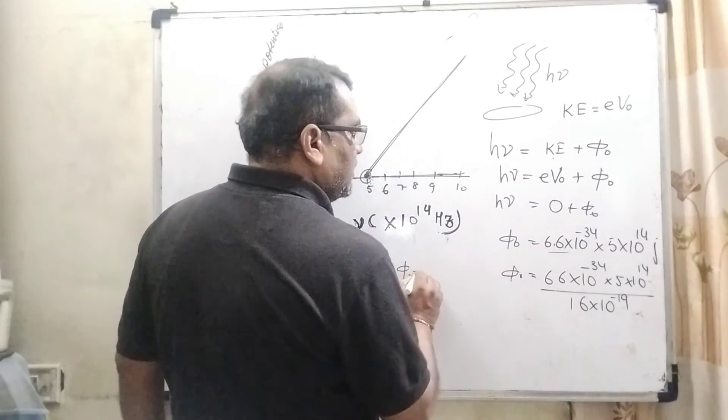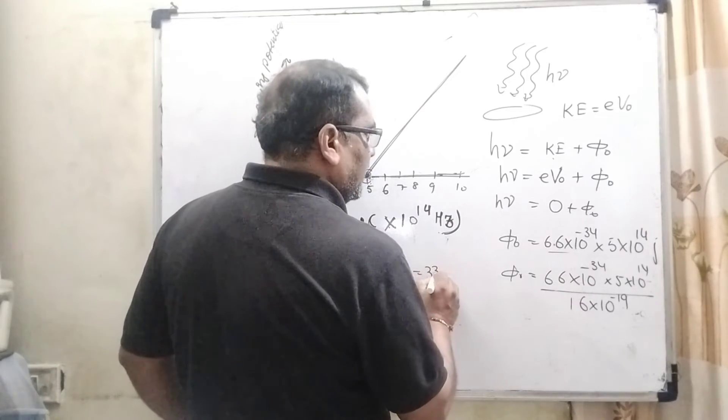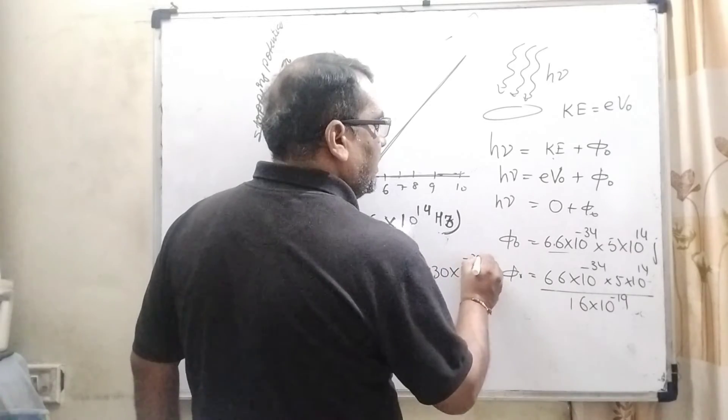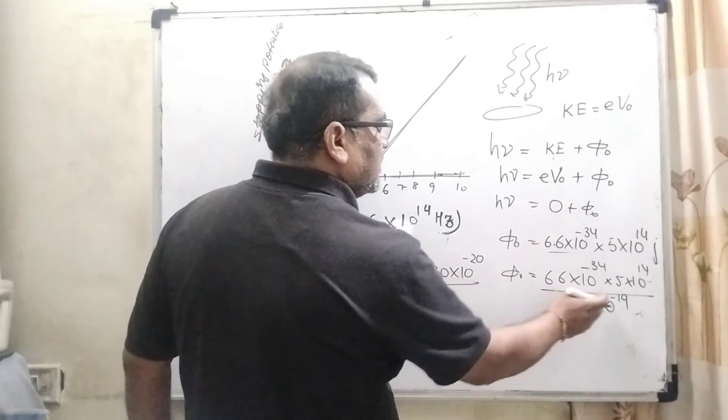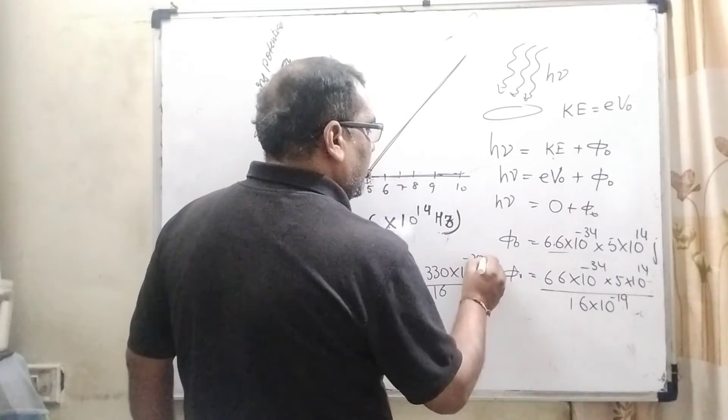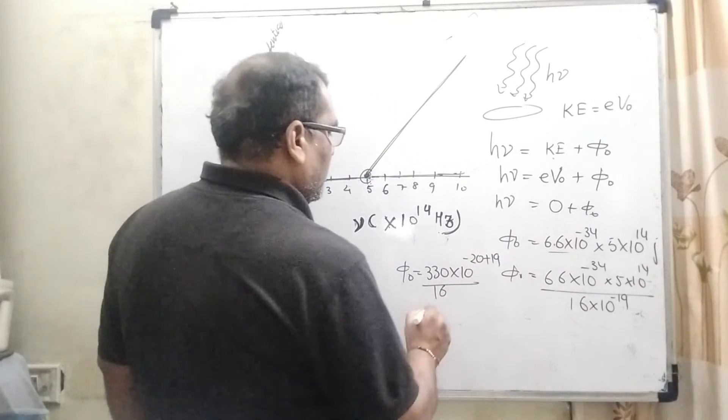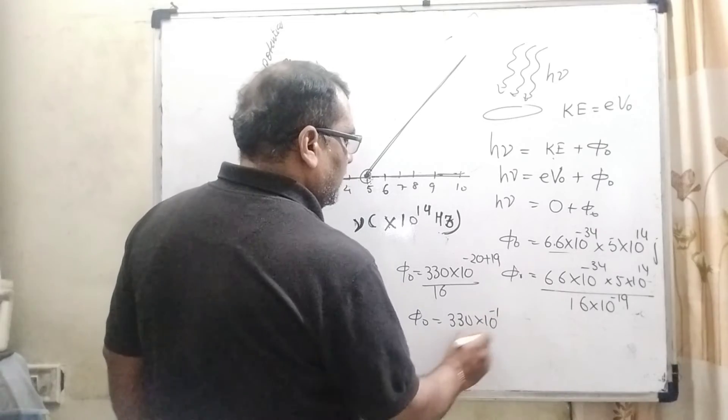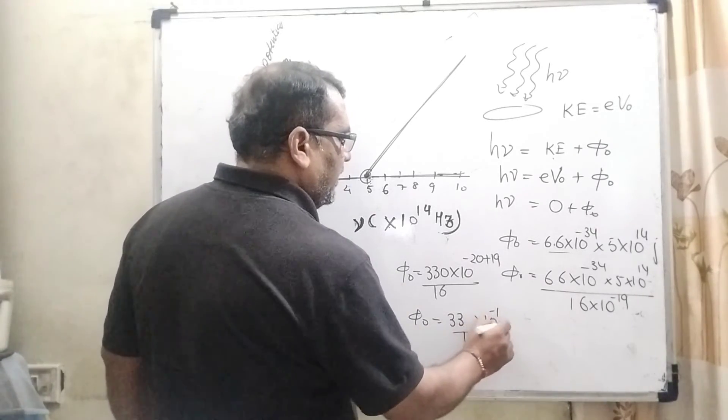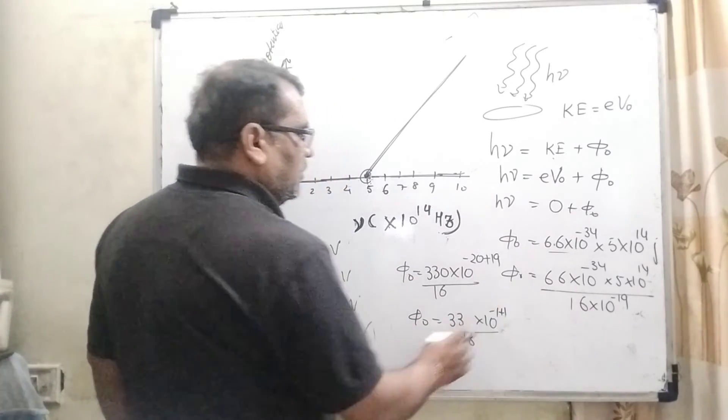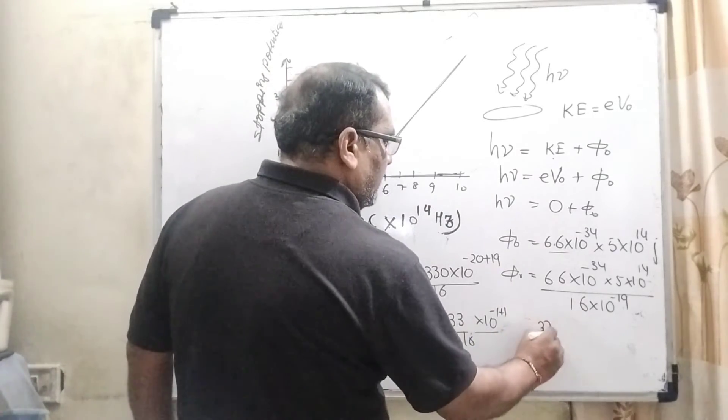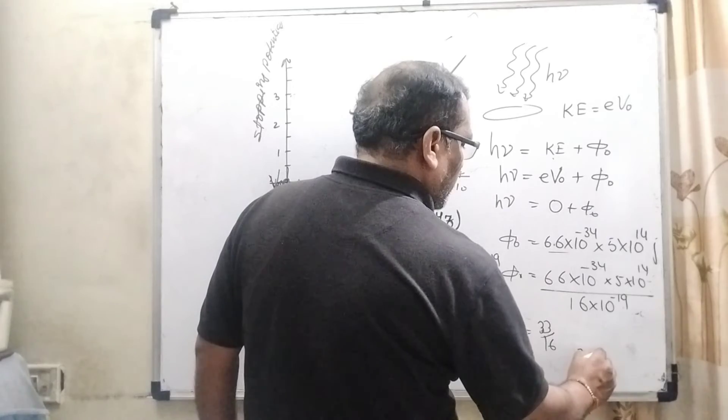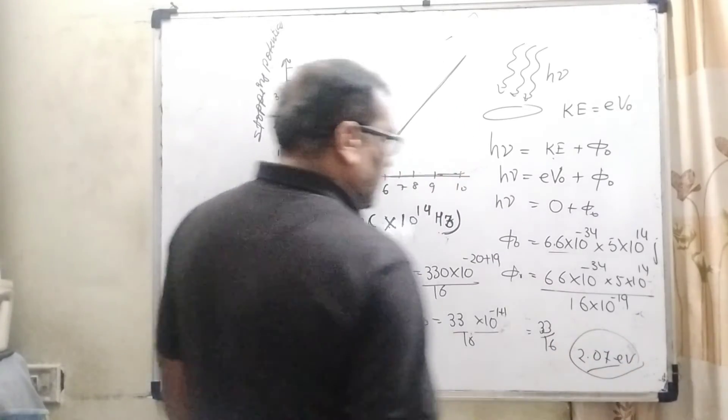So here φ0 equals 33 into 10 to the power minus 1 upon 16, and this minus 19 goes to the numerator and becomes positive. So 10 to the power 0 that is 1. So here 33 by 16, divided by 16 gives 2.07 electron volt. So here the correct answer is 2.07 electron volt.